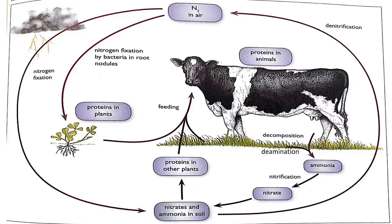Nitrogen fixation occurs where energy from lightning makes nitrogen combine with oxygen to form nitrogen oxide, which dissolves in rainwater and is washed into the soil to form nitrate ions. The first type is nitrogen-fixing bacteria in root nodules, which changes nitrogen gas into ammonia to help legume plants make amino acids.